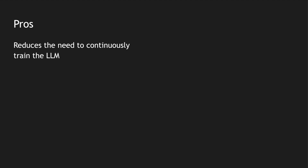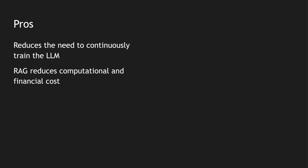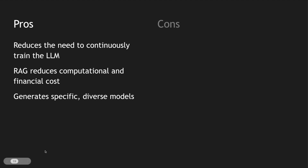Now going to the pros of the RAG architecture — RAG reduces the need for continuously training the LLM. Previously we would give different data set samples again and again to train these LLMs, but using RAG we don't have to do that because we get dynamic information from the data source. RAG also reduces the computational and financial cost of continuously training these models because we retrieve data instantly, similar to how we get it from a REST API. RAG can also help diverse models — you can create generic models that pull generic information and replace it with use-case-specific information, creating specific and diverse models.